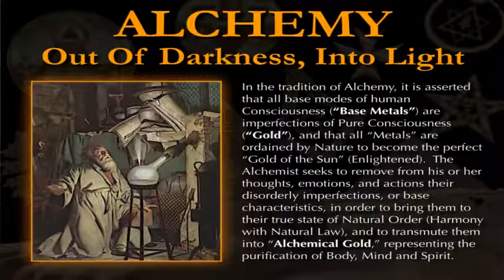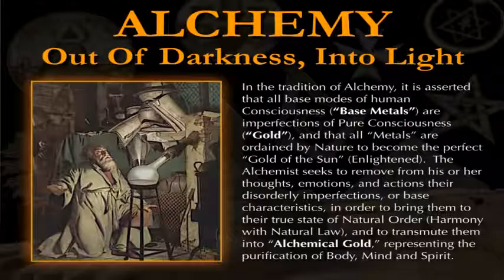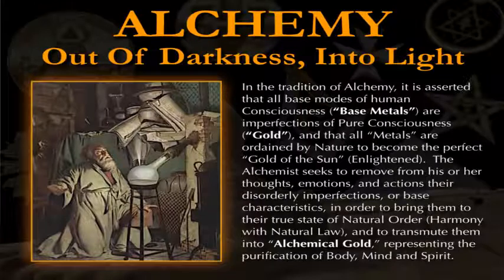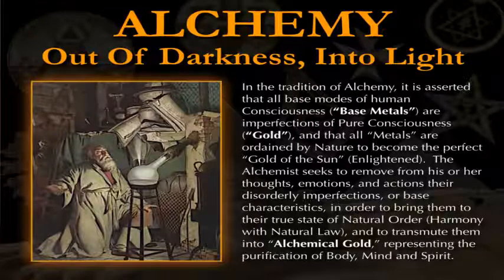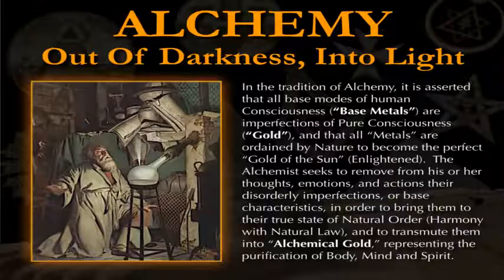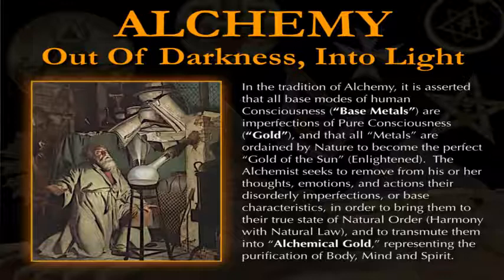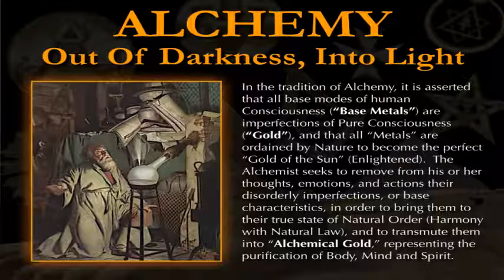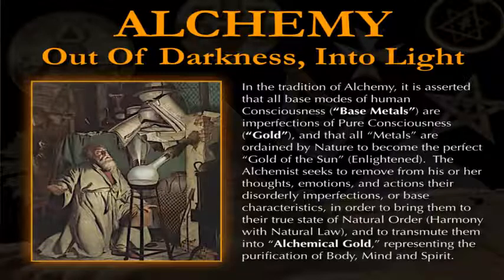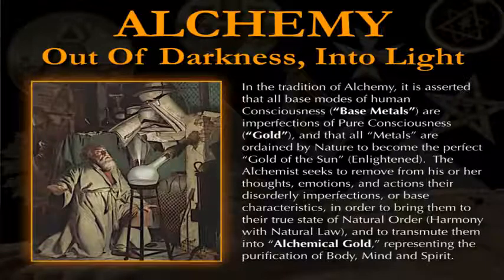It's taught that all metals are ordained by nature to become the perfect gold of the sun, or in other words, enlightened consciousness or enlightened beings. The alchemist then seeks to remove from his or her thoughts, emotions, and actions their disorderly imperfections or base characteristics in order to bring them to their true state of natural order, in other words harmony with natural law, and to transmute them into alchemical gold, which represented the purification of mind, body, and spirit.